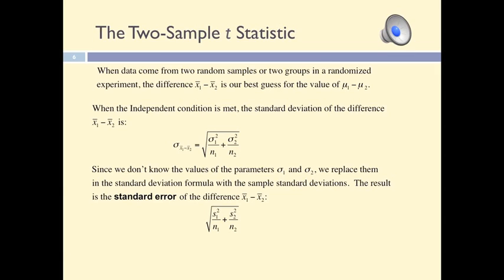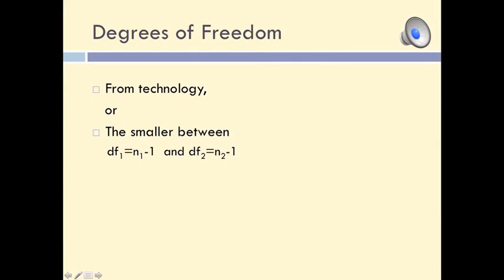For each sample, we divide the square of the sample standard deviation by the sample size, we add the results of the two divisions, and then we take the square root of the sum. We already know that the shape of the t-distribution is different for different sample sizes. Therefore, when making inferences about the difference between the two population means, we must take into account the size of the two samples, because we use the t-distribution to make these inferences.